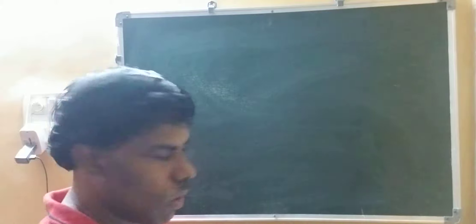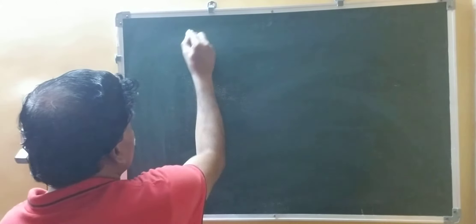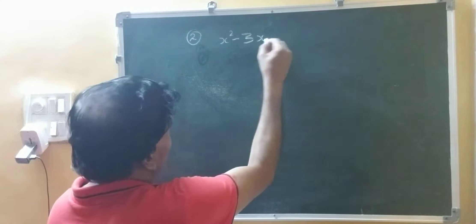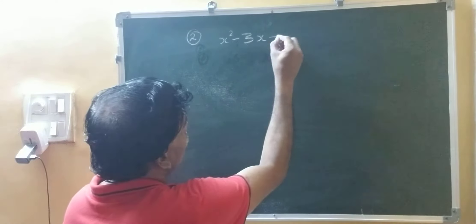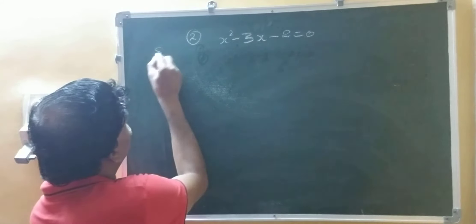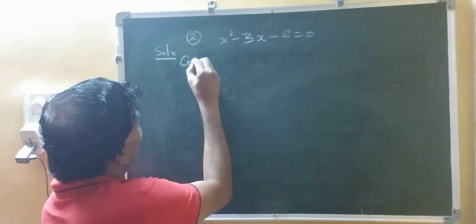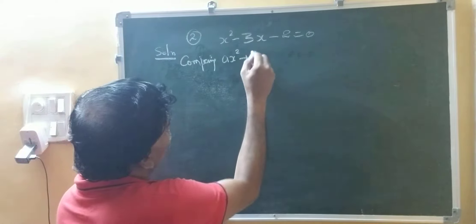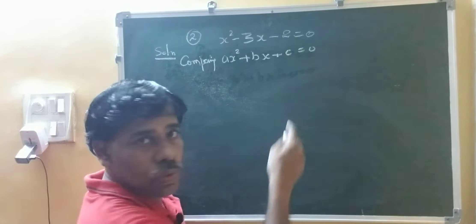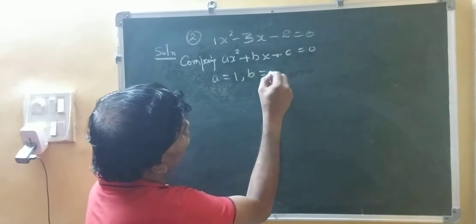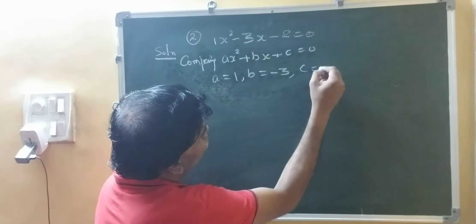Now, the second sum we will solve: x squared minus 3x minus 2 is equal to 0. Solution — comparing with ax squared plus bx plus c equals 0, we get a equal to 1, b equal to minus 3, c equal to minus 2.